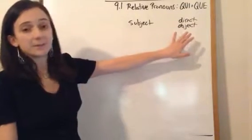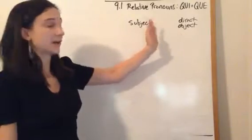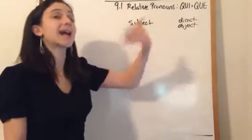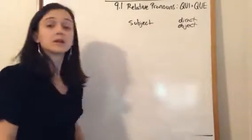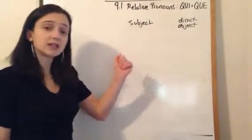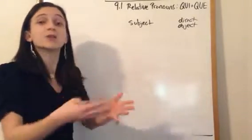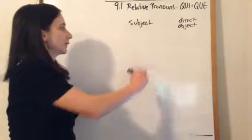Direct object is not followed by the verb right afterwards. It's followed by, usually, another subject and then a verb. So, let's look at the first instance, the subject. We're going to take two different sentences and put them together because we're linking those related ideas, and you will see what I mean.